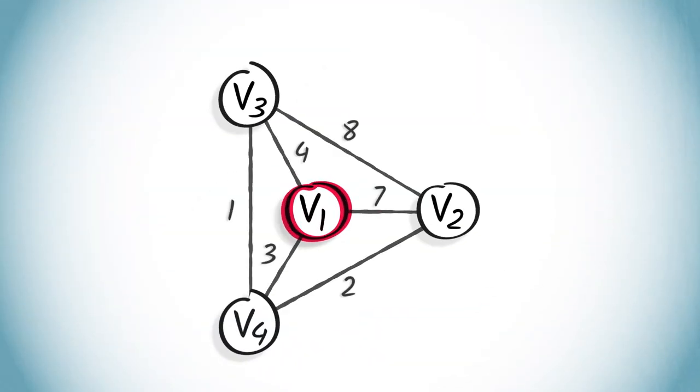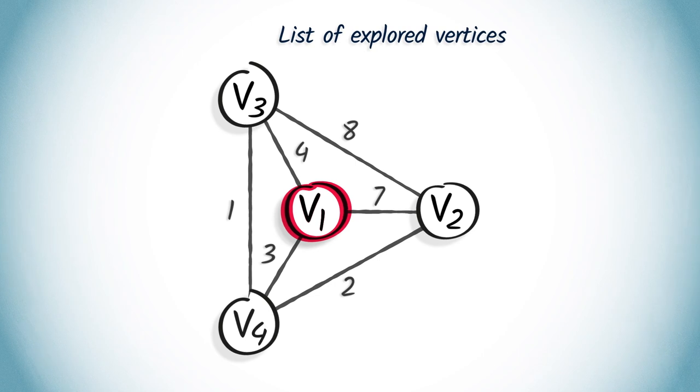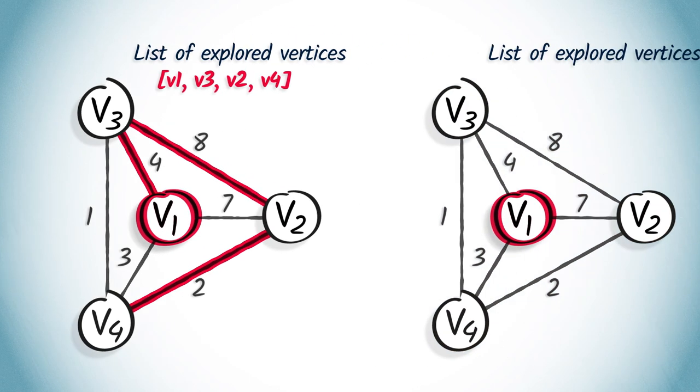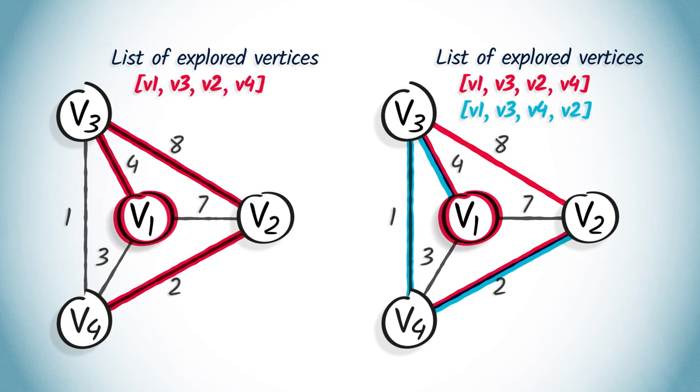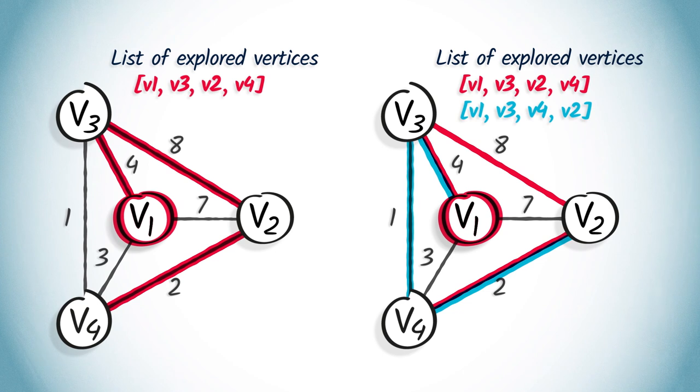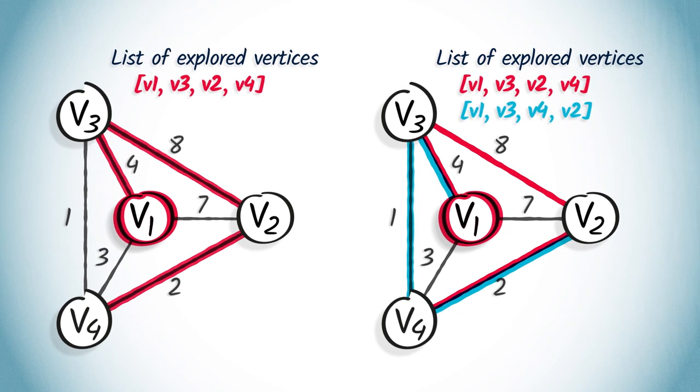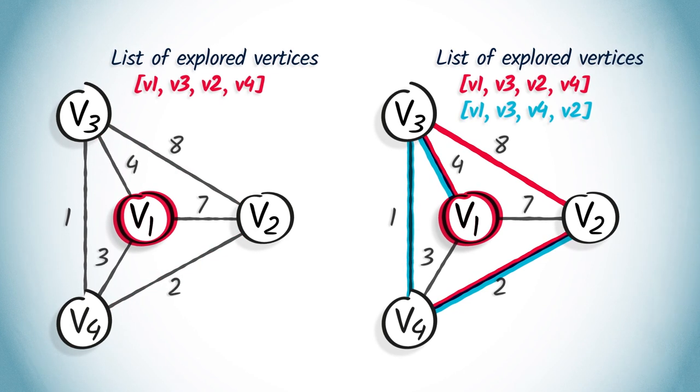So far in this MOOC, we've considered DFS for which each vertex is explored only once. Here, we are interested in the case where a vertex does not appear twice on the same path, but can appear twice if in different paths. So here, we consider a variation of the DFS, where the list of explored vertices is modified for the current explored branch, and not for the other branches.